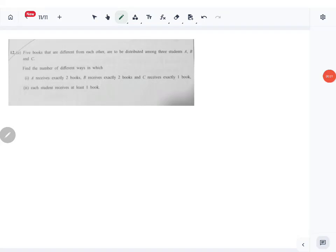Let's look at question number 12, part 1. This is a combinations and permutations question. Five books that are different from each other are to be distributed among three students A, B, and C. Find the number of different ways in which A receives exactly two books, B receives exactly two books, and C receives exactly one book.